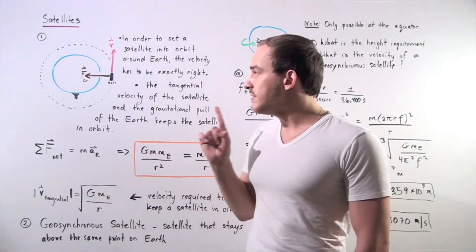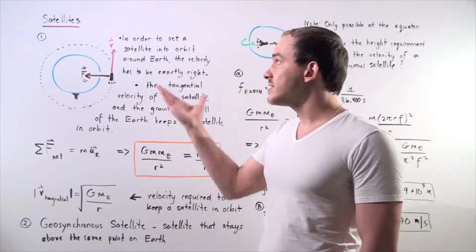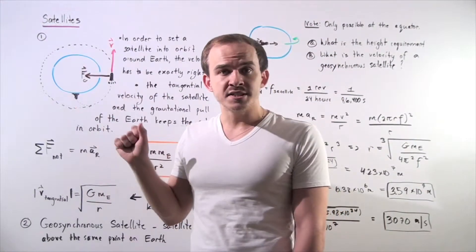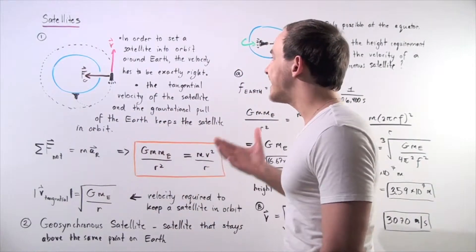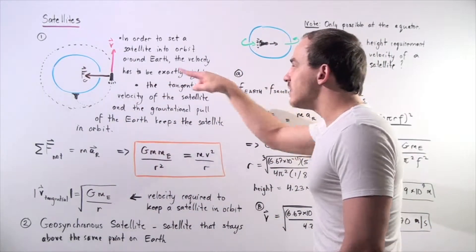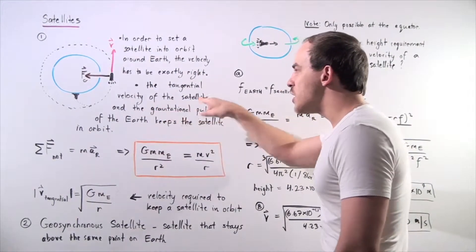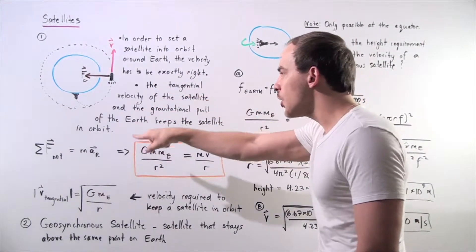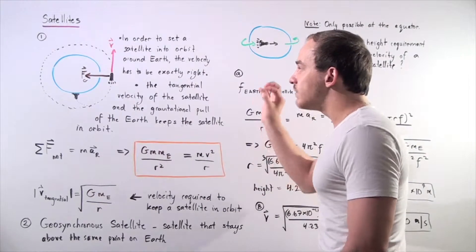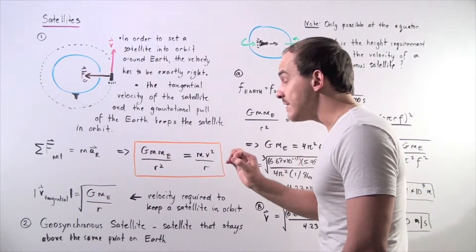On the other hand, if the velocity is too high, our satellite will simply escape into space, never to return again. So the tangential velocity of the satellite and the gravitational pull of the Earth keeps the satellite in orbit, and the velocity has to be exactly right.